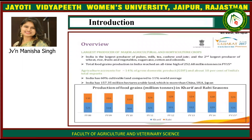Here is an overview of the agriculture sector. India is the largest producer of major agricultural and horticultural crops — the largest producer of pulses, milk, tea, cashew and jute, and the second largest producer of wheat, rice, fruits and vegetables, sugarcane, cotton and oilseeds.